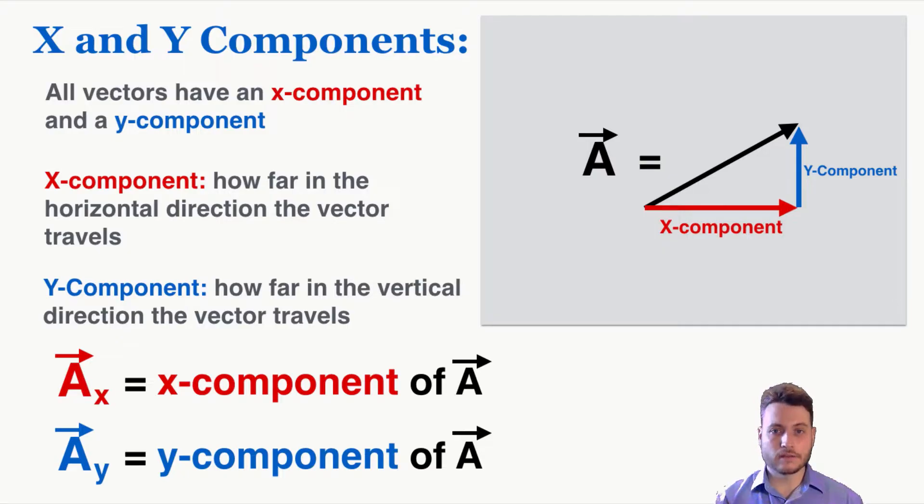X and y components are themselves vectors, they also have directions. Like vector A is going up and to the right, so its x component points to the right and its y component points up.